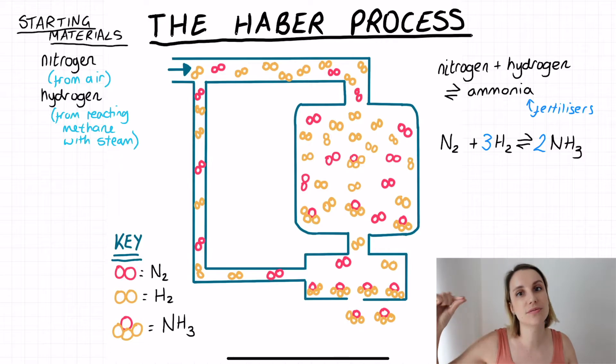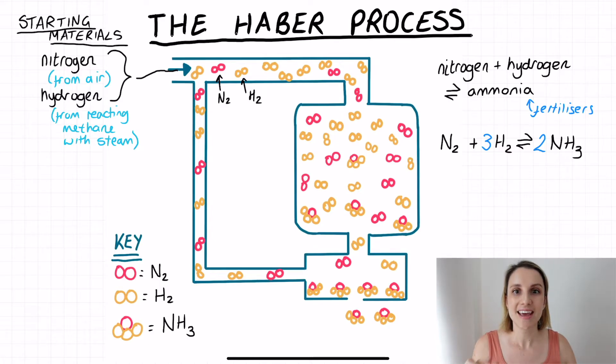Now you can see both of these coming in here, the pink ones are nitrogen, the yellow ones are the hydrogen. And you might notice that I've drawn more hydrogens than I have nitrogen molecules. In general we're aiming for a 3 to 1 ratio of hydrogen to nitrogen because if we look at our balanced equation we need three times the amount of hydrogen as we do nitrogen. So this is reflected in my diagram.